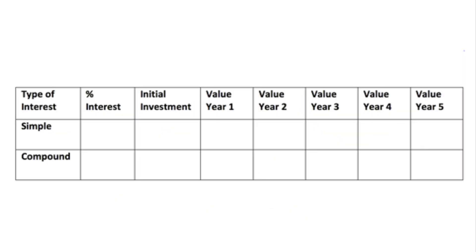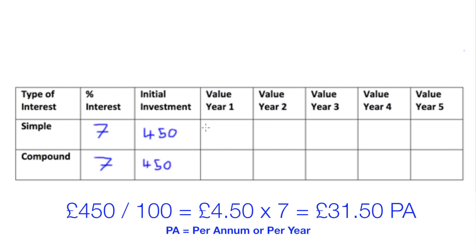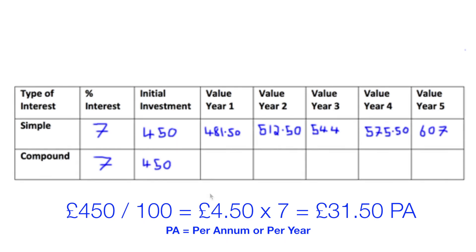You may have already worked out which sort of interest gives you more money, however this table allows us to compare the two. Let's say we go down the high street and see two different bank accounts offering the same 7% interest — one simple interest and the other compounded. To work out the simple interest, we take the initial investment of £450, divide that by 100 to get £4.50, and times it by seven, as it's 7% interest we're looking for each year, which gives us £31.50 to add on each year.